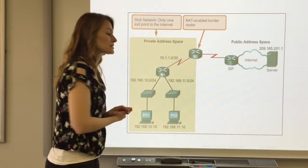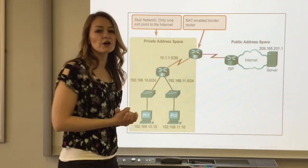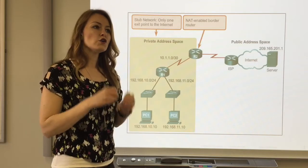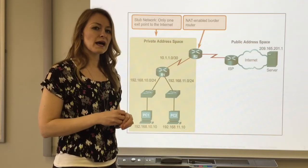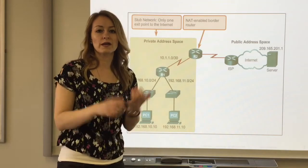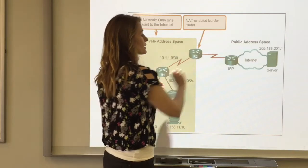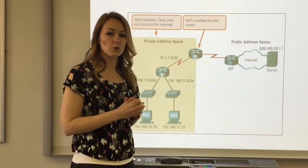So NAT works great in this type of scenario. Within this local area network, we can use non-unique IP addresses. They're unique within the local area network—we only have one princess and one little slugger—but they don't have to be unique compared to the rest of the world.